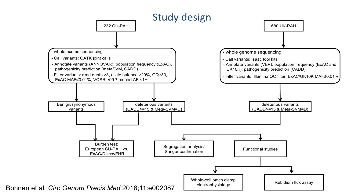To replicate these findings, they assessed 680 patients in the UK PAH cohort who had undergone whole genome sequencing for ABCC8 variants. They identified 3 additional rare or novel missense variants and 1 splice variant. They confirmed a significant excess of rare predicted deleterious missense variants in ABCC8 in patients compared to control groups of European ancestry.